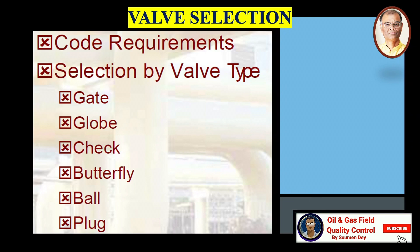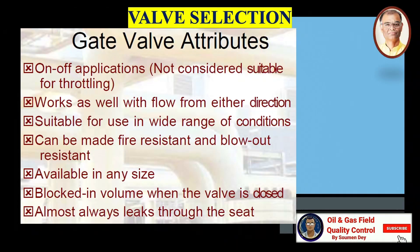Selection by valve type: we will select the gate valve for on and off applications. It is not considered suitable for throttling, works well with flow from either direction, suitable for use in a wide range of conditions, can be made fire resistant and blowout resistant, available in any size. There is blocked-in volume when the valve is closed, and it almost always leaks through the seat.